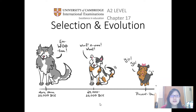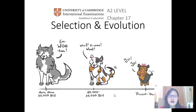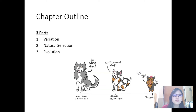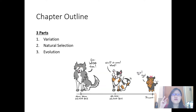Hey everyone and welcome to chapter 17: Selection and Evolution. There are three parts in this chapter: number one is variation, number two is natural selection, and number three is evolution.